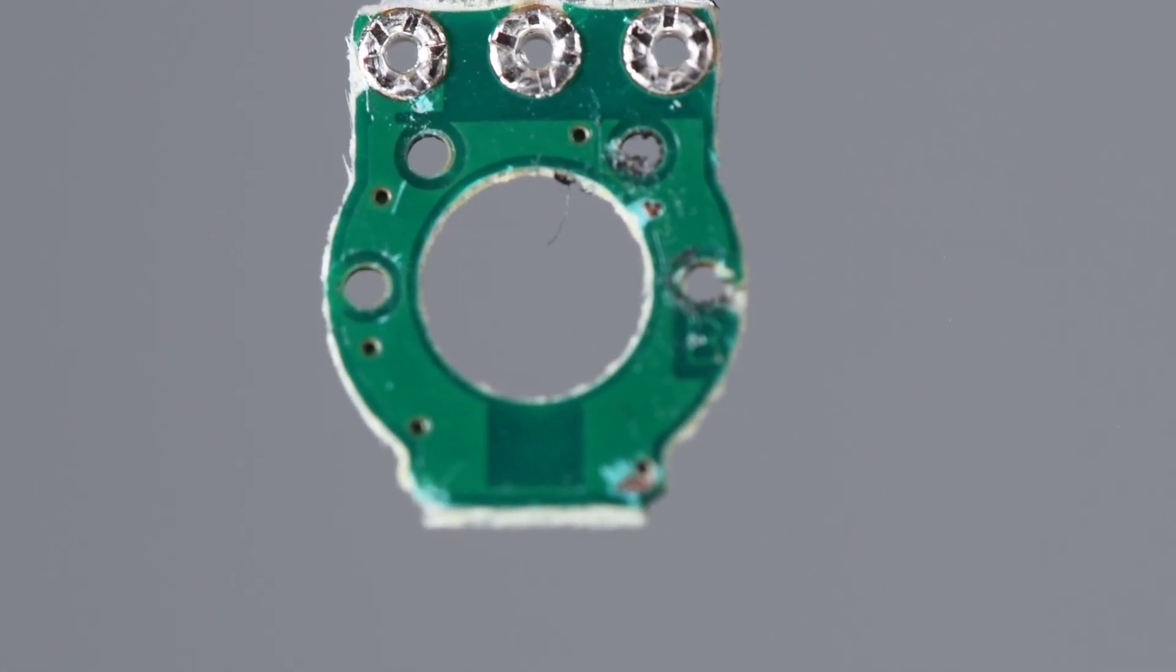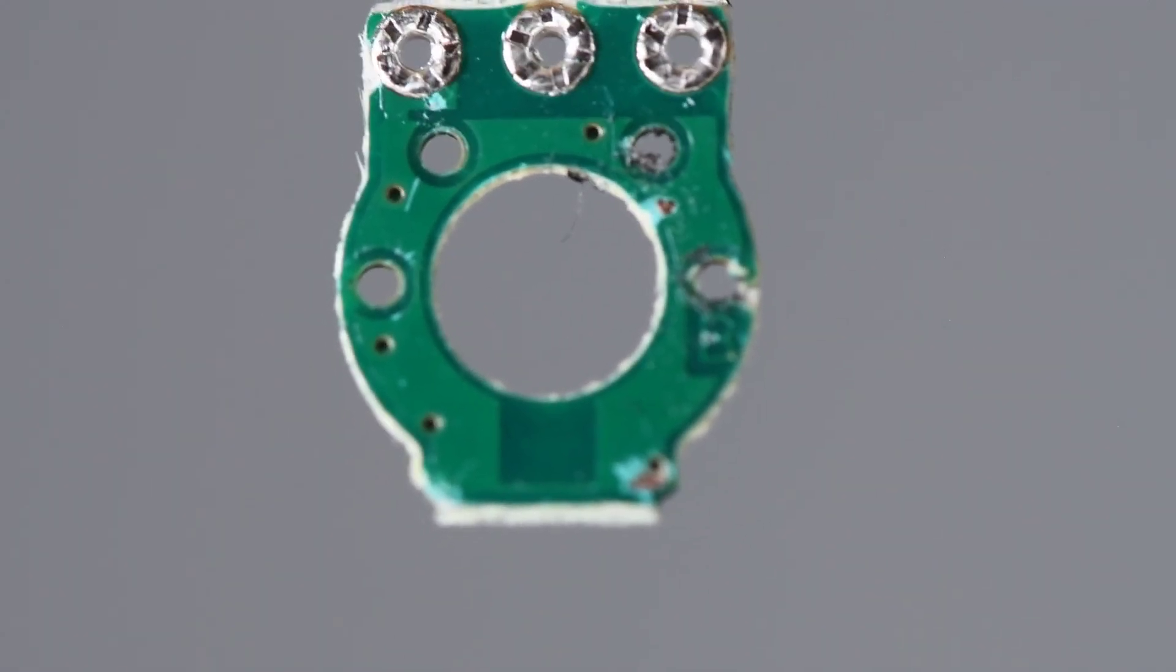Nothing but ground trace on the back of the sensor. This is the side facing the magnet. Interesting that the copper trace is removed right where the sensor IC is located.